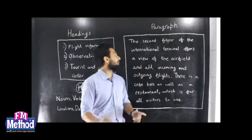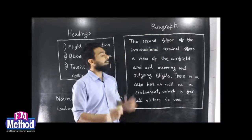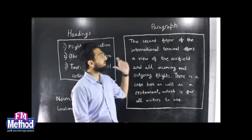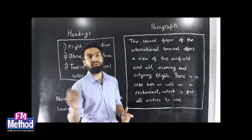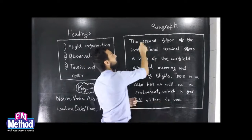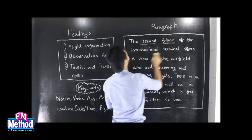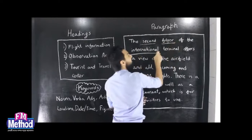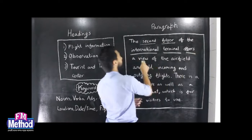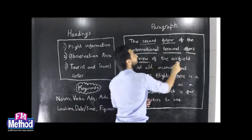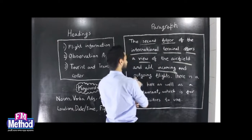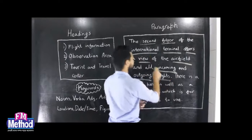So let's start with the paragraph. We don't have to read everything — we just have to scan for the keywords. What we get is: second floor, international terminal, offers, view, airfield, incoming, outgoing, flights.